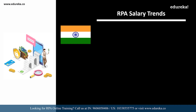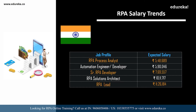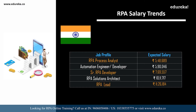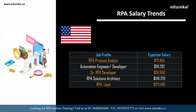Looking at India first, according to Indeed.com: an RPA process analyst can expect around 5,48,000 per annum; an automation engineer or automation developer can expect 5,90,000; a senior RPA developer can expect around 7,69,000; an RPA solutions architect around 10,11,000; and an RPA lead around 11,26,000. Similarly in the USA: an RPA process analyst can expect around 72,000 dollars; an automation engineer around 90,000 dollars; a senior RPA developer around 98,000 dollars; an RPA solutions architect around 1,00,000 dollars; and an RPA lead around 1,23,000 dollars.